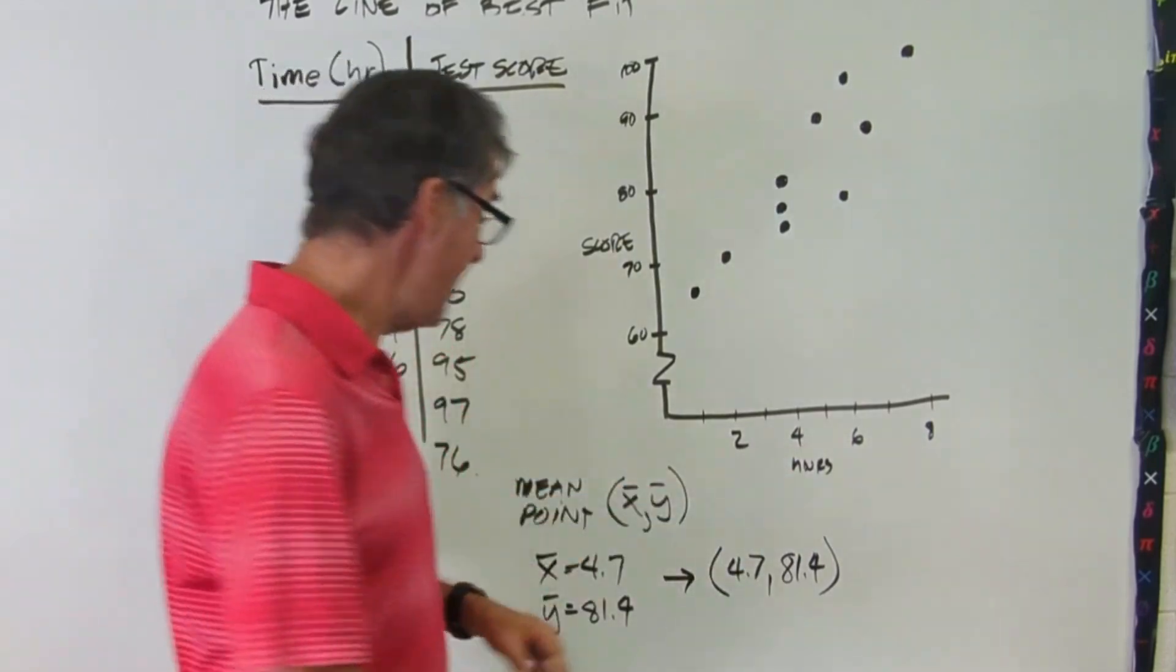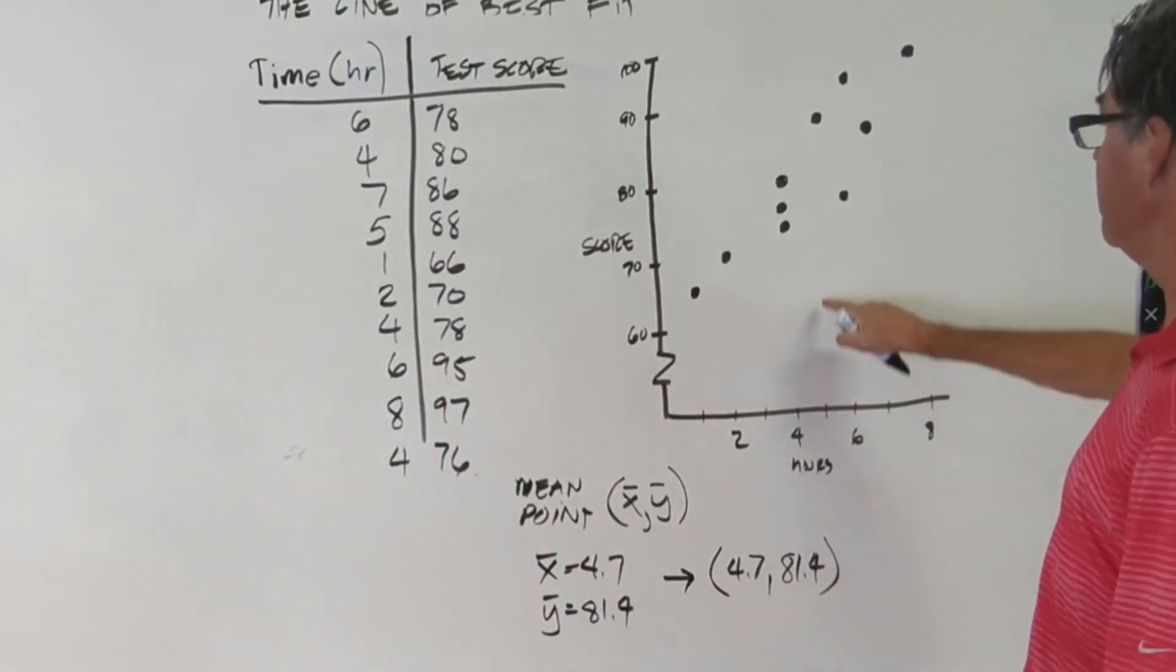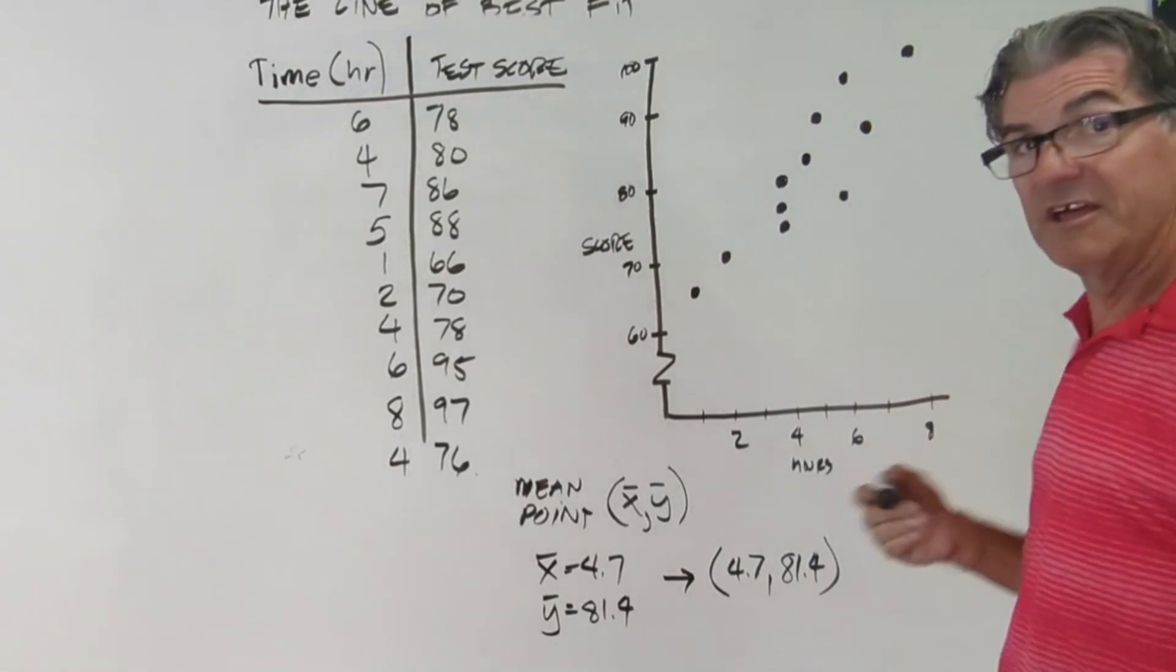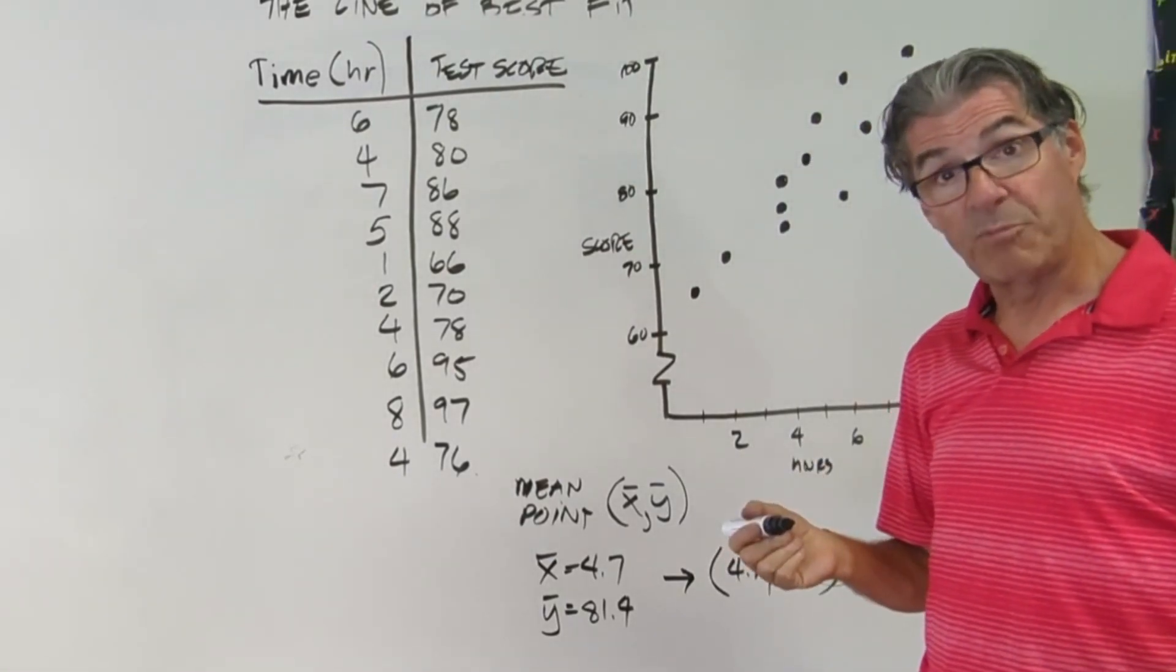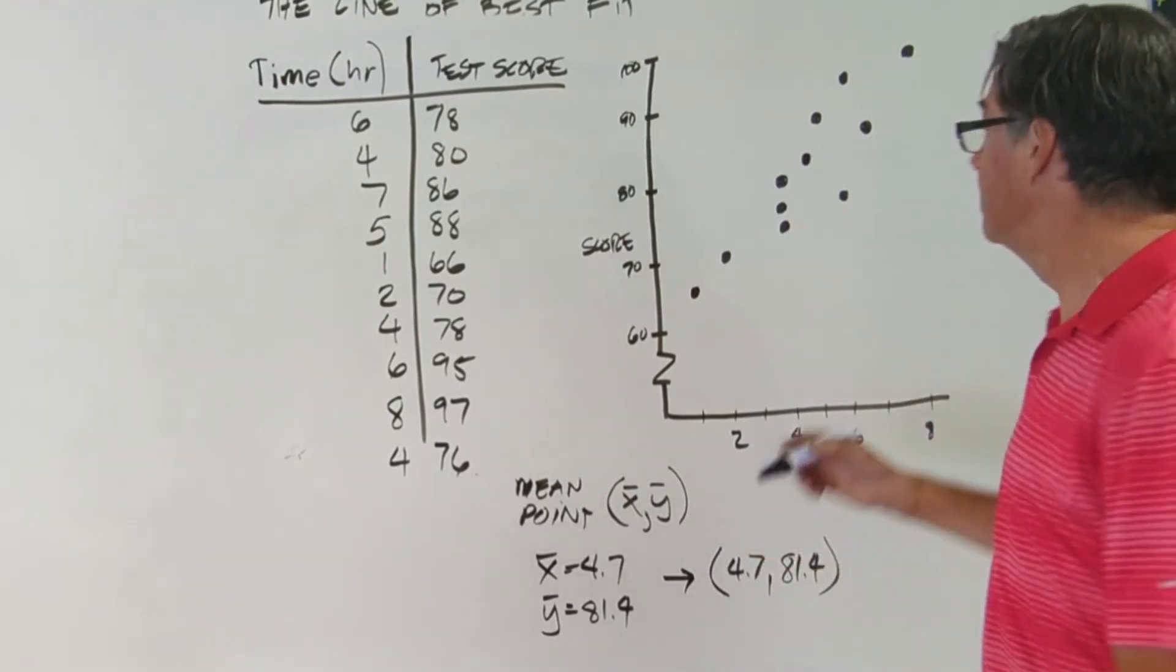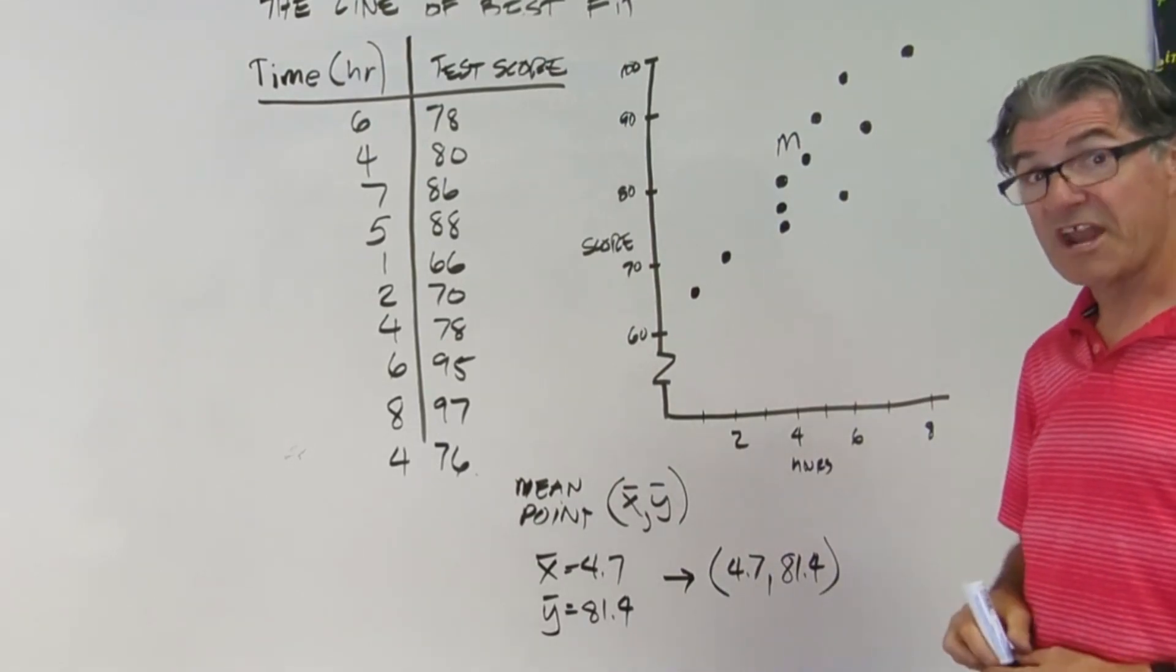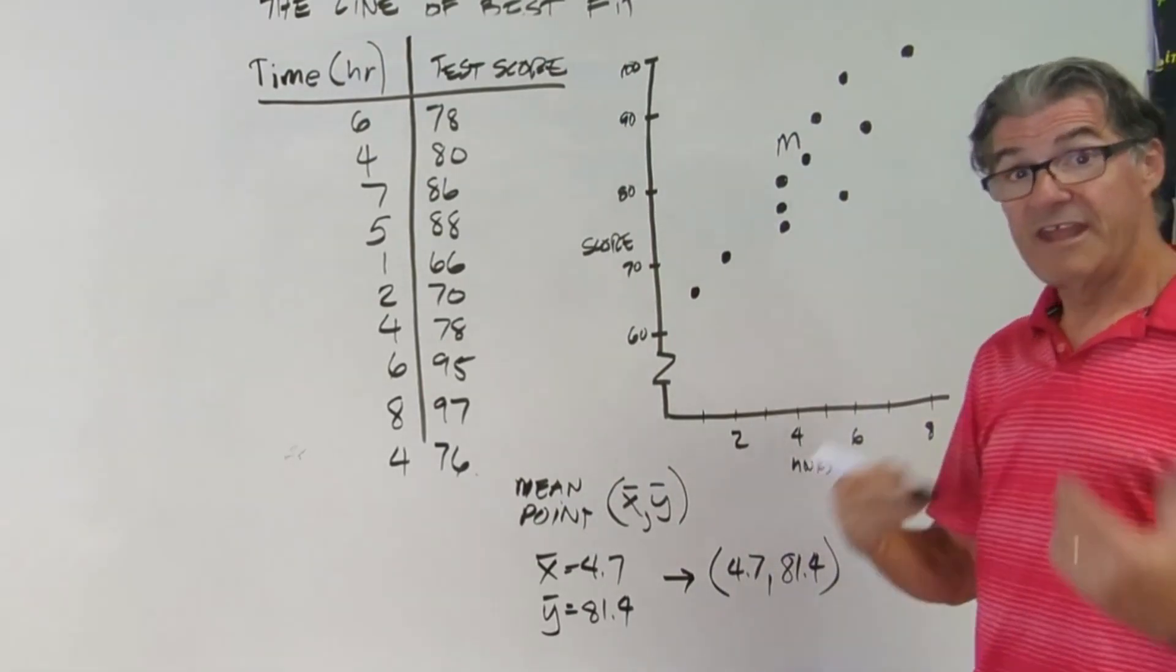So we're going to graph that. So 4.7, right about there. And then 81.4, that's right about there. Now, this is not a data point. It's a mean point. So we're going to designate that with an m, just so that we know that's not actually a data point.